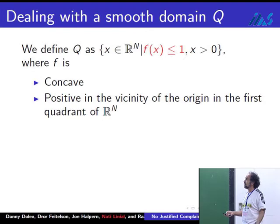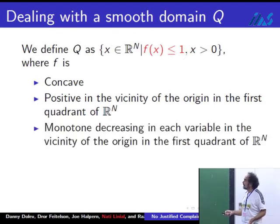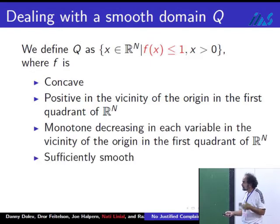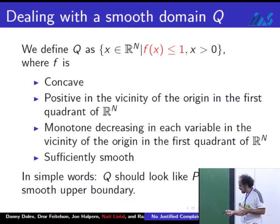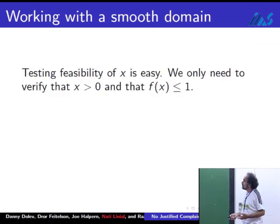I just want to more or less mimic the same things I had in the original problem. It has to be concave, positive in the vicinity of the origin of R^n in the first quadrant, monotone increasing in each variable, and sufficiently smooth. What I'm saying here is I want Q to look exactly like P except to have a smooth upper boundary. At the moment we only have difficulties with it.